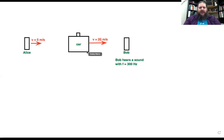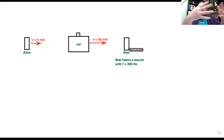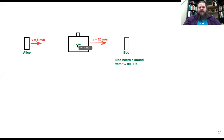The frequency of the observer is not going to be the same as the frequency of the source. If the car is moving, then the sound that the car emits is not going to be the same as the sound that Bob hears. Even though it's just one wave traveling outwards, Bob is going to hear a different frequency. And in particular, if the car is moving towards Bob, is Bob going to hear a higher pitch sound or a lower pitch sound?